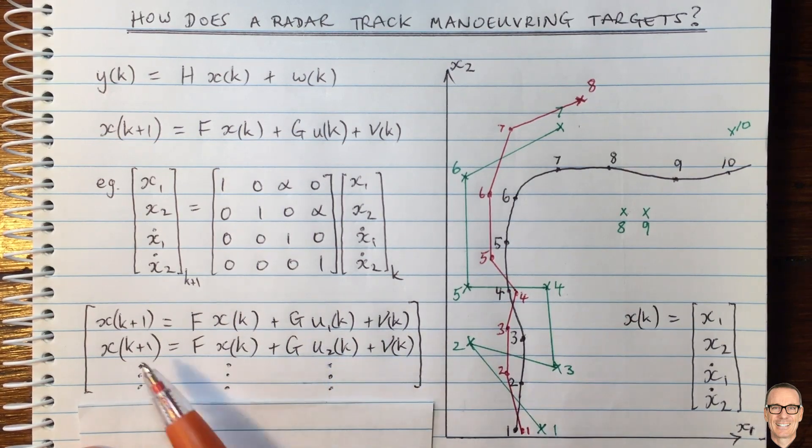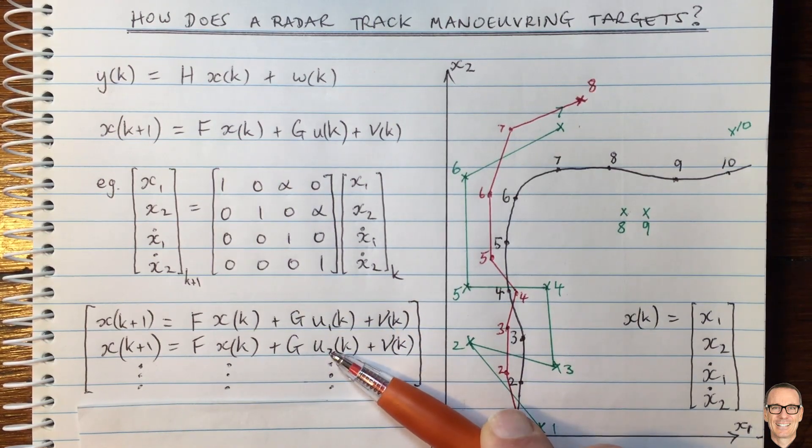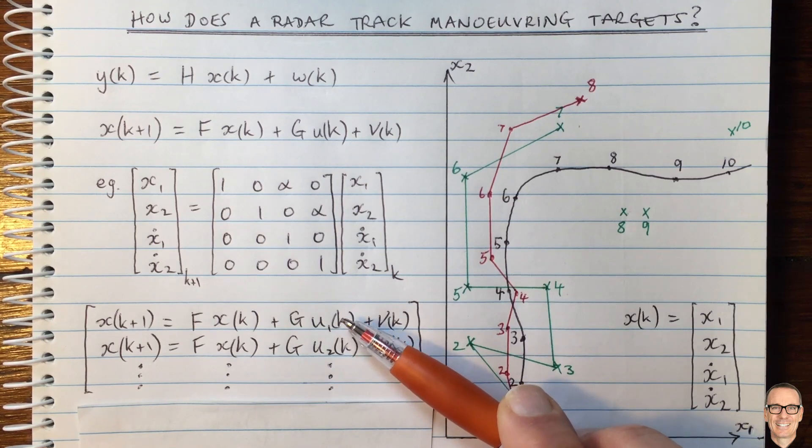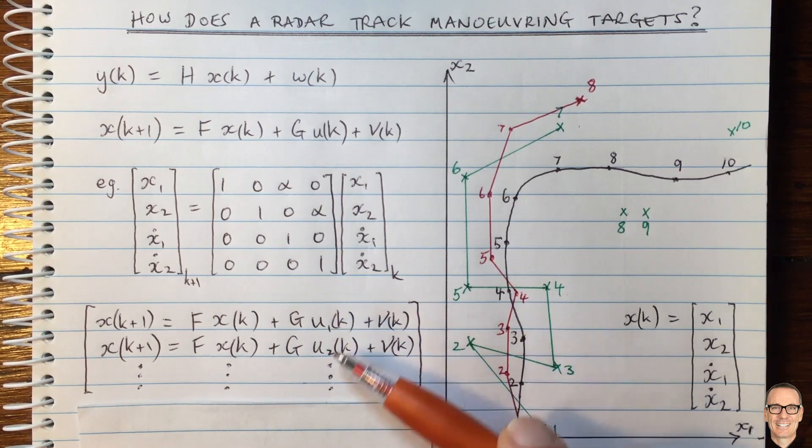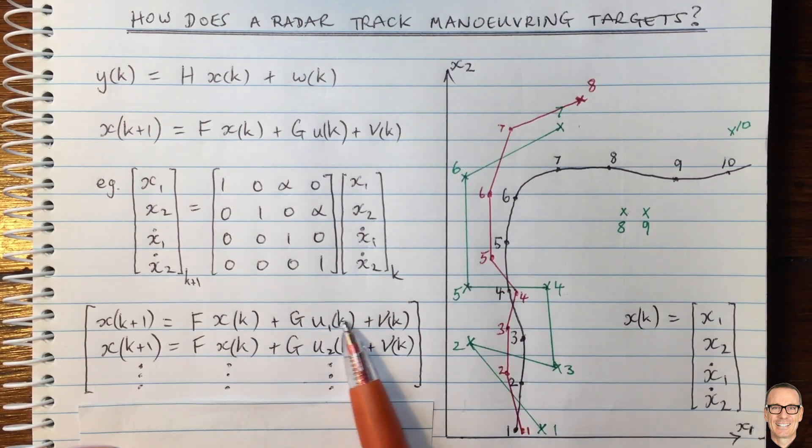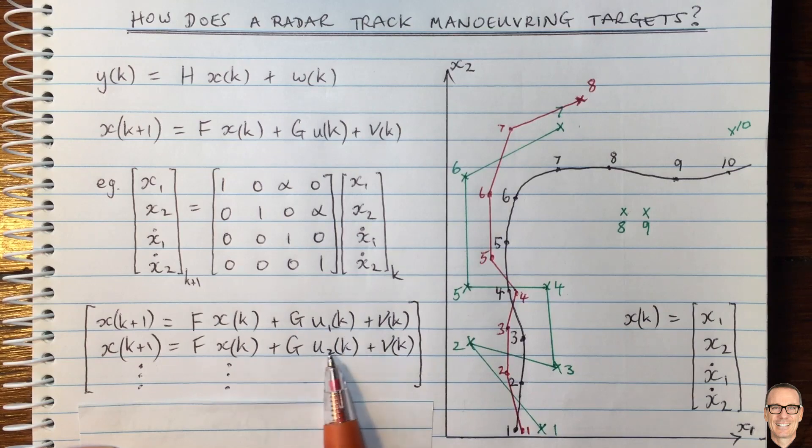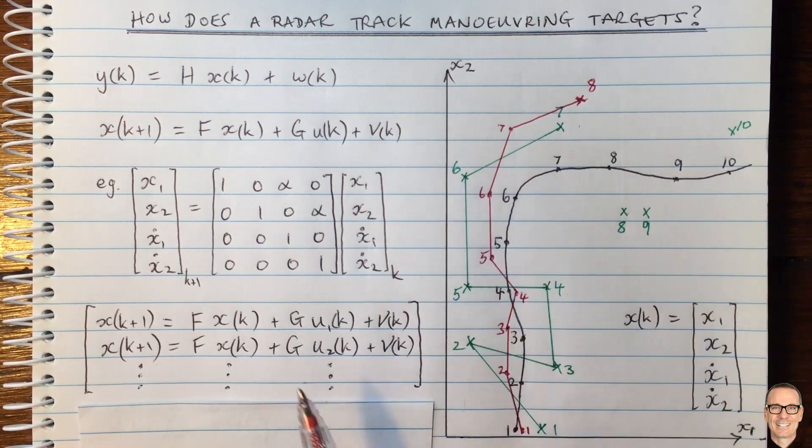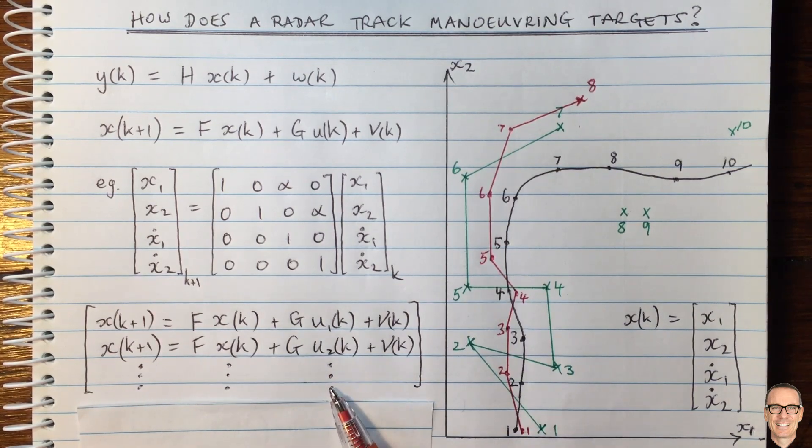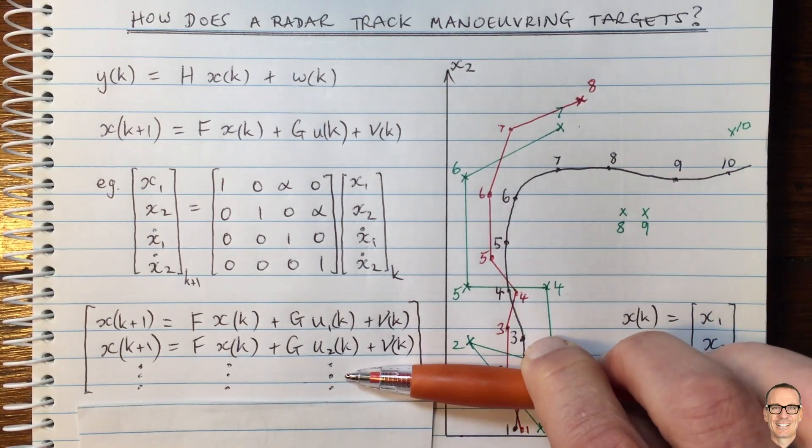So in this approach, we run parallel filters for different maneuvering functions. We can assume that they are separated piecewise type functions. And for example, in a straight line model, U1 would be zero for all time, a right hand turn model would have a certain characteristic U2, a left hand turn would have a U3, a speeding up model would have a different U4, and so on.